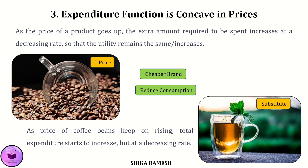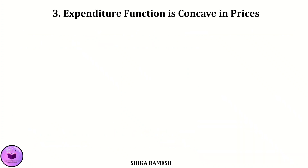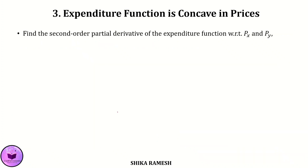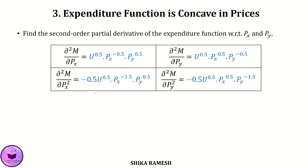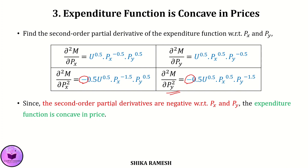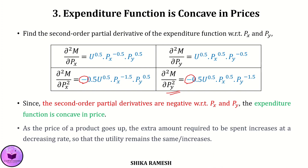To prove that the expenditure function is concave in prices, we find the second-order partial derivatives with respect to px and py. We get ∂²m/∂px² = −0.5 × u^0.5 × px^(−1.5) × py^0.5 and ∂²m/∂py² = −0.5 × u^0.5 × px^0.5 × py^(−1.5). Since the second-order partial derivatives are negative, the expenditure function is concave in prices — meaning the extra expenditure increases at a decreasing rate while utility remains the same.